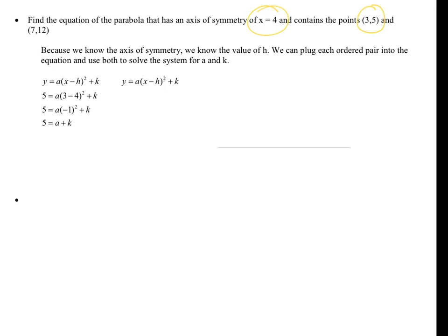So now we have to do it again, only this time we're going to use the second point and also the same h. So we're going to plug that in. 12 equals a, 7 minus 4 all squared plus k. And then we do a little bit of math and we get 7 minus 4 is 3, 3 squared is 9. So now we have two linear equations, and we can solve a system of linear equations. You guys learned that in algebra 1.